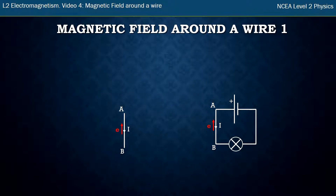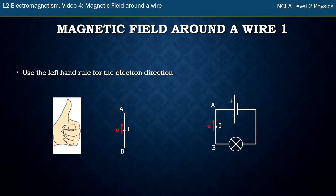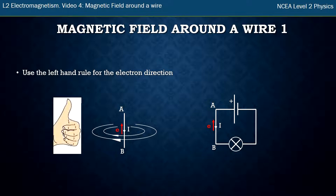So here I've just drawn that section of wire again because we're going to work with just that. Current goes down and the electrons are flowing upwards, and so we just use the left hand rule that we've already been taught for that electron direction. My thumb points upwards because that's the way the electrons are going — upwards, opposite the way the current goes — and my fingers curl around with the magnetic field. On the right hand side of the wire my fingers are coming out of the page towards me, and as I curl my hand around on the left hand side of the wire I get crosses as my fingers move into the page. So that's what a magnetic field looks like around a wire.